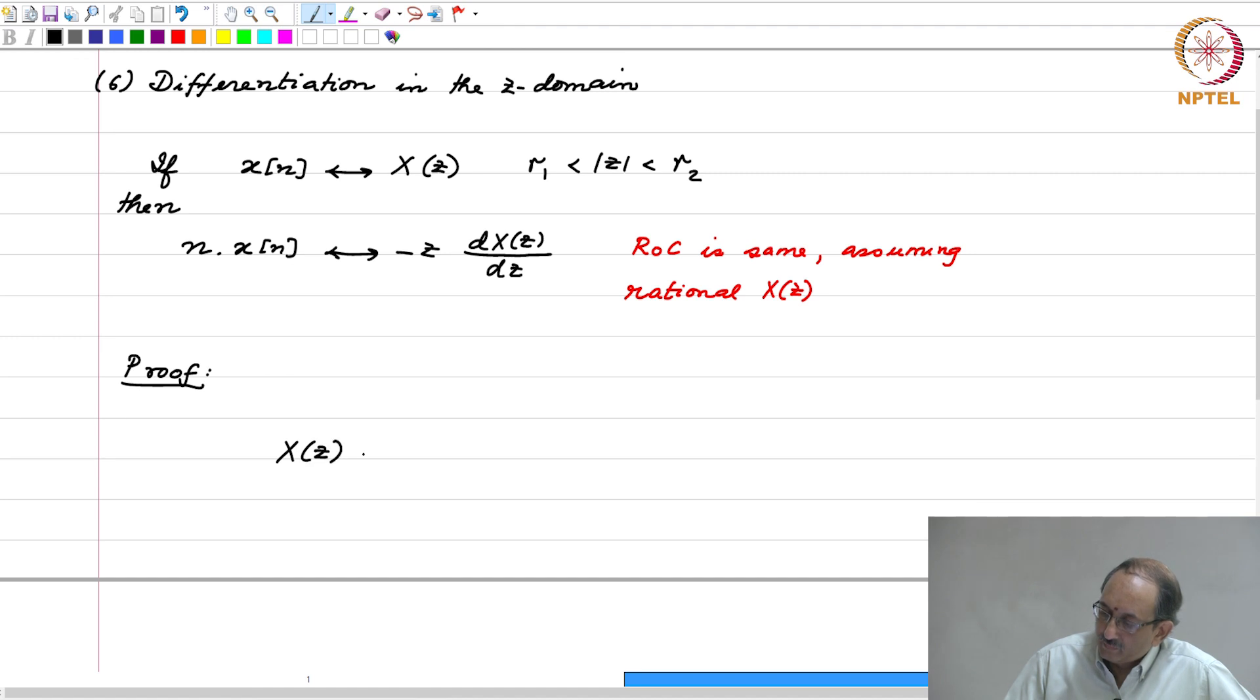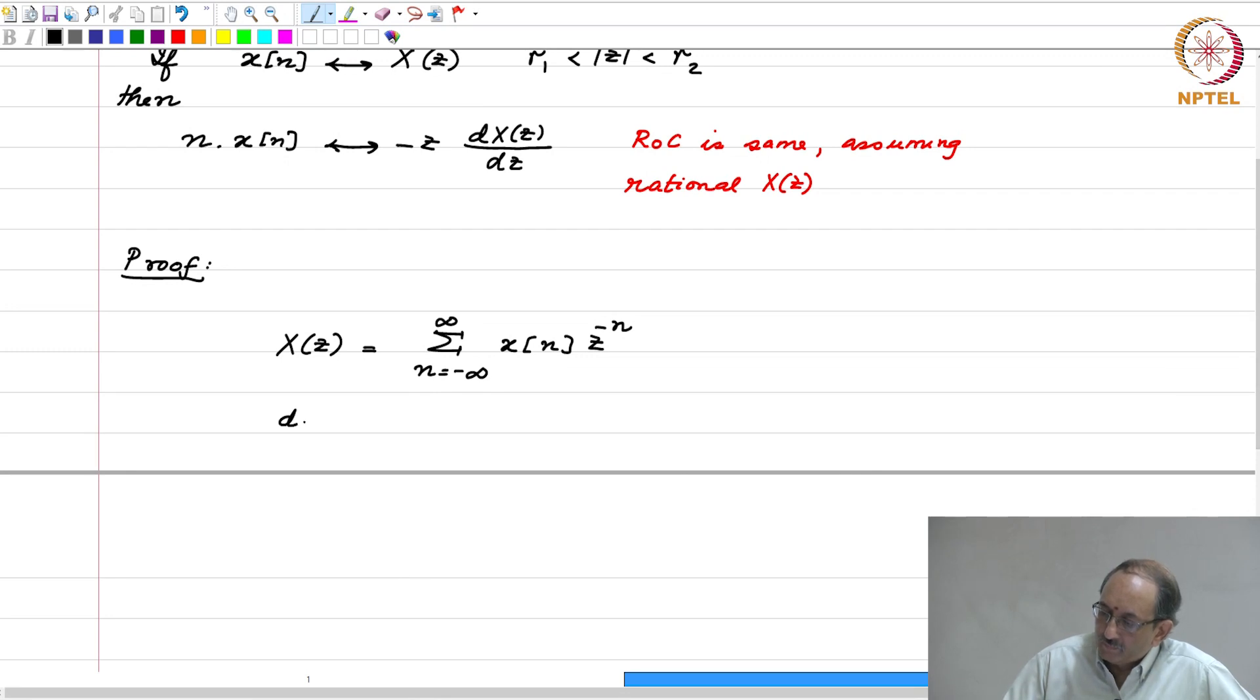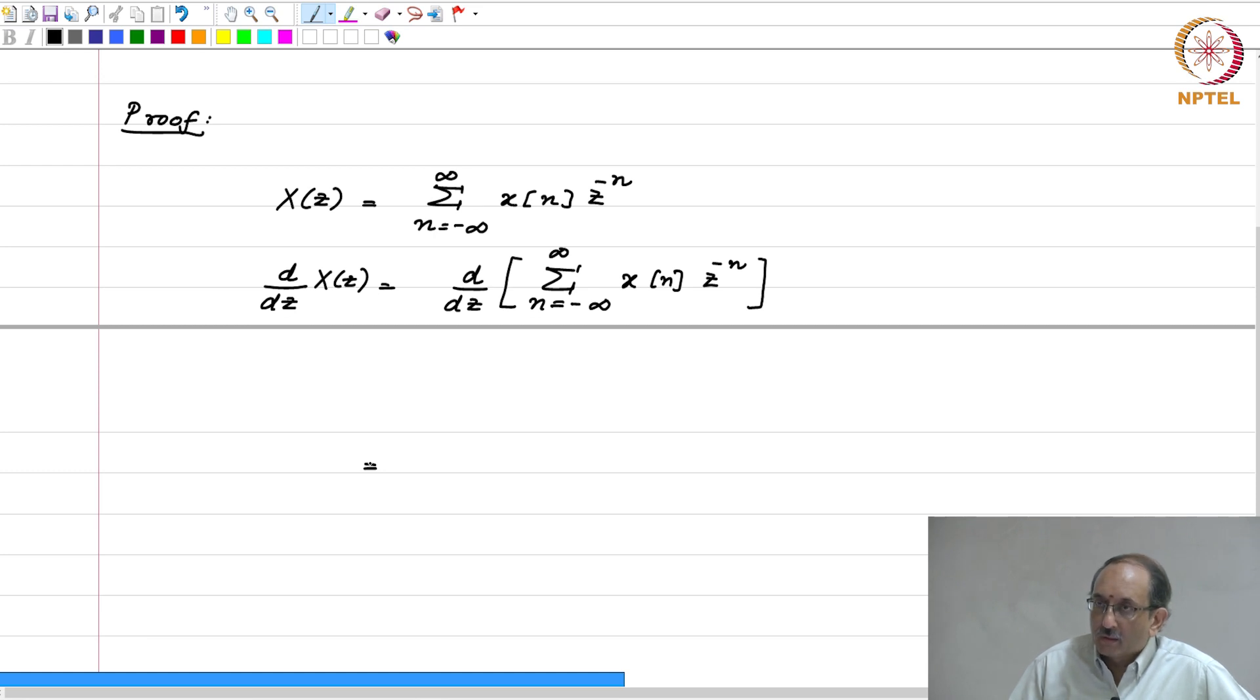So, we have X of Z by definition sum over all N, X of N Z to the minus N and then let us differentiate with respect to Z. This becomes d by dz of this quantity. And, usually when we reach this step, we happily interchange the two operations. Remember that d by dz is a limiting operation, this also is a limiting operation and you cannot in general interchange these two operations.